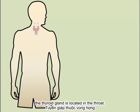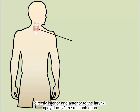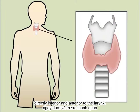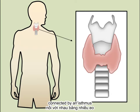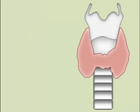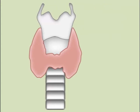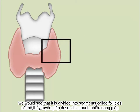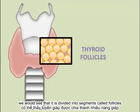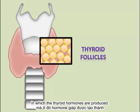The thyroid gland is located in the throat, directly inferior and anterior to the larynx. It sits like a bow tie across the larynx and is composed of two lobes connected by an isthmus. If we examined a magnified version of the thyroid gland, we would see that it is divided into segments called follicles, in which the thyroid hormones are produced.